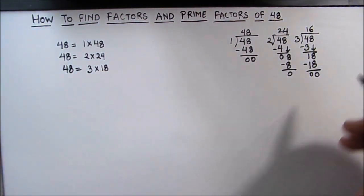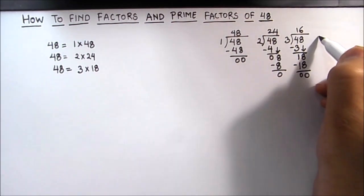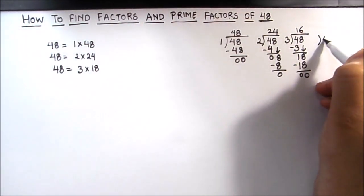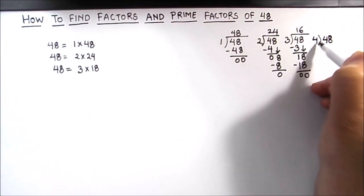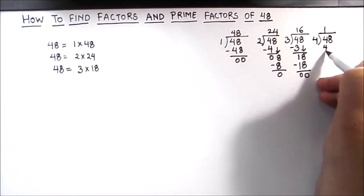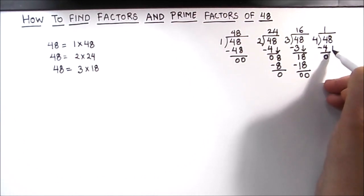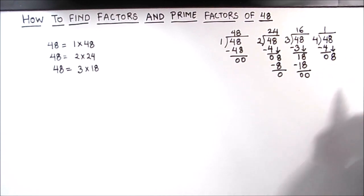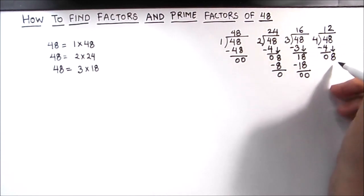Next we will divide 48 by number 4. 4 times 1 is 4, and we got 0 remainder. We drop down 8 and 4 times 2 is 8. So 4 is also a factor of 48, giving us the factor pair 4 times 12.